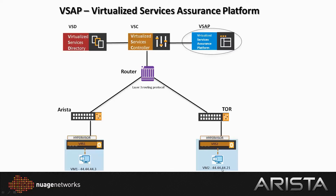VM2 connects to the virtual switch 2 via the Tor router. The Tor and the Arista connect together via a Layer 3 routing protocol. In this topology, we try to do a ping between VM1 and VM2, showing you the value of how VSAP can do event correlation between the underlay and the overlay networks. First, we're going to show the ping working between VM1 and VM2 — both are in the same Layer 2 domain in the VSD interface.